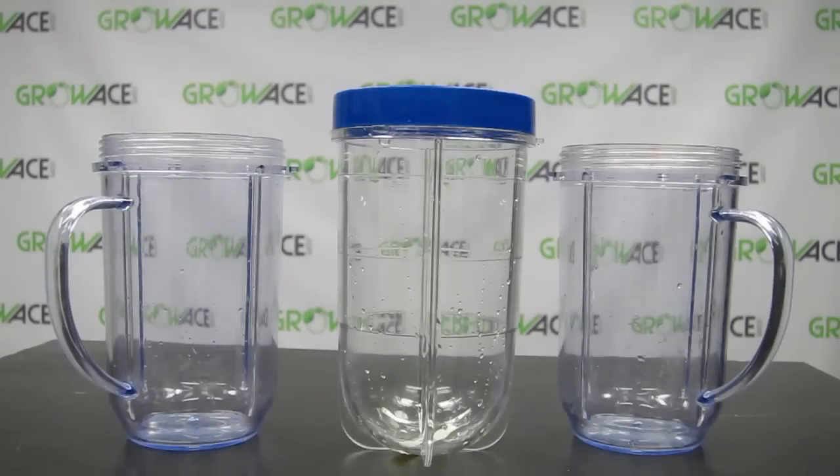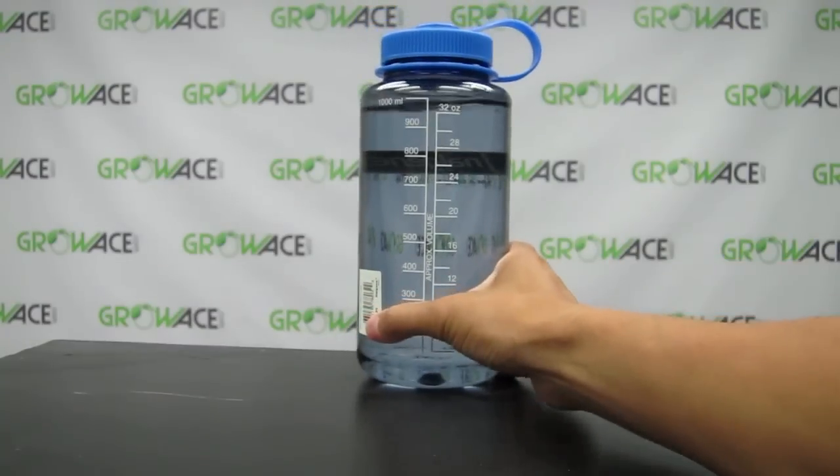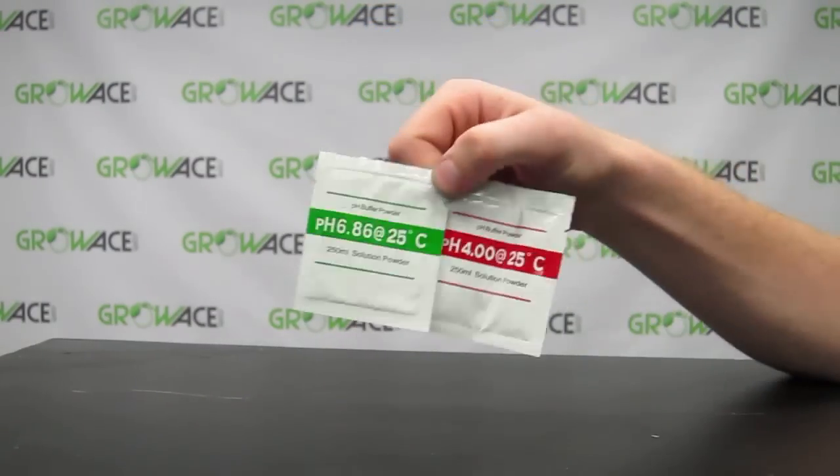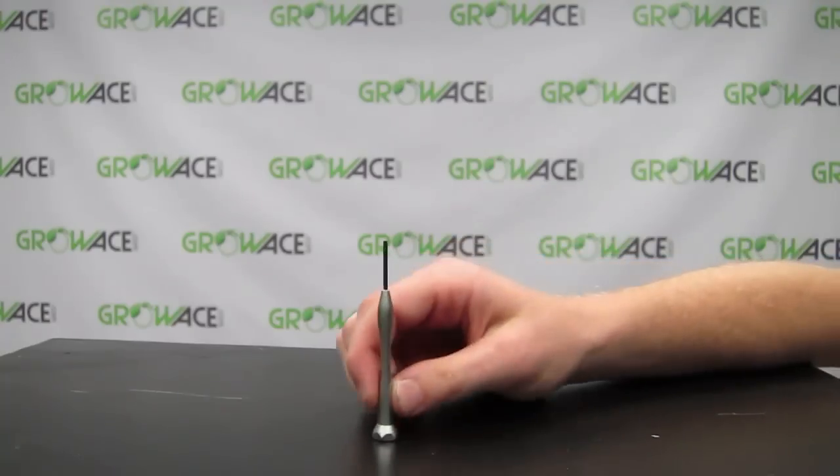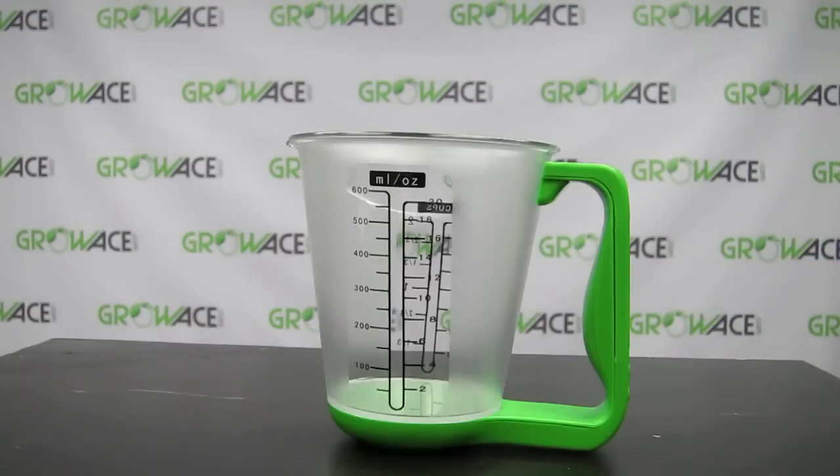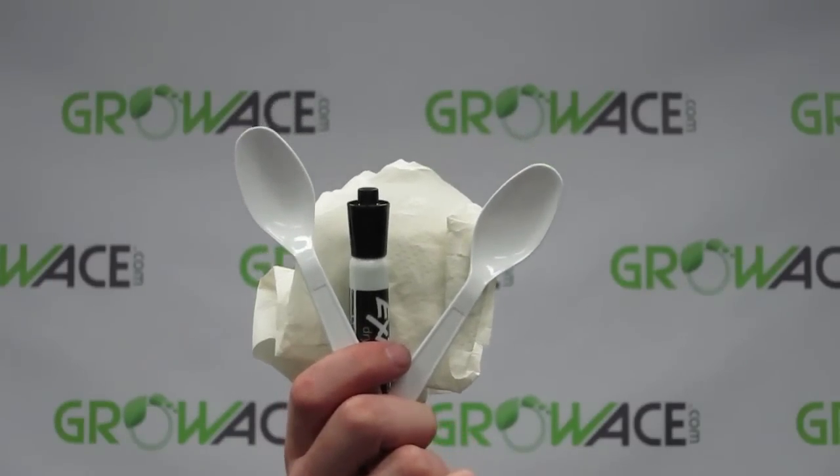The tools needed are three cups, 1000 milliliters of distilled water, the pH buffer packs that come with the meter, a small flathead screwdriver, a measuring cup, two spoons, a marker, and some napkins.